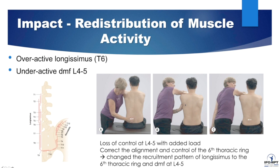Now, if I add control at the level of that sixth thoracic ring and then resist — you can see when looking at his lumbar spine that his low back is more controlled, L4 doesn't move, and his strength immediately increases. When you let go of the control of the thoracic ring, you see a change in the alignment of his low back and he immediately weakens. This is just another example of a change in a recruitment pattern of the low back that links the thorax to the low back.